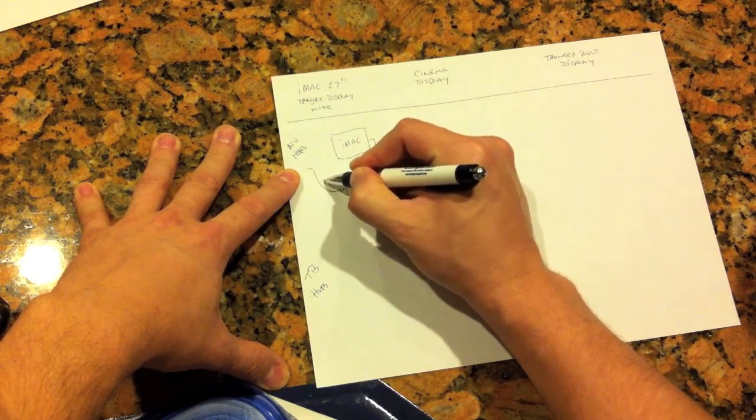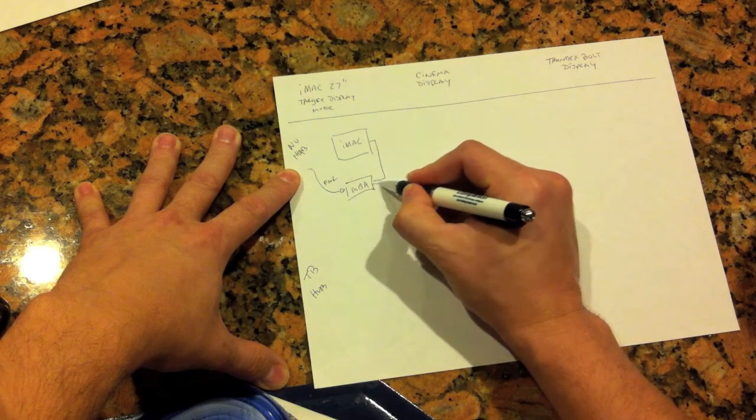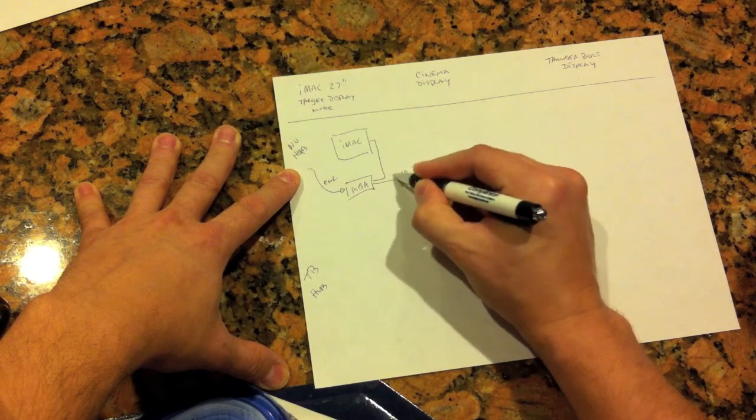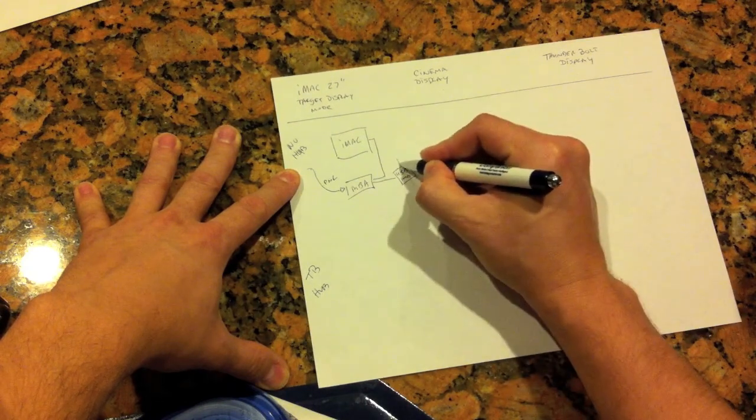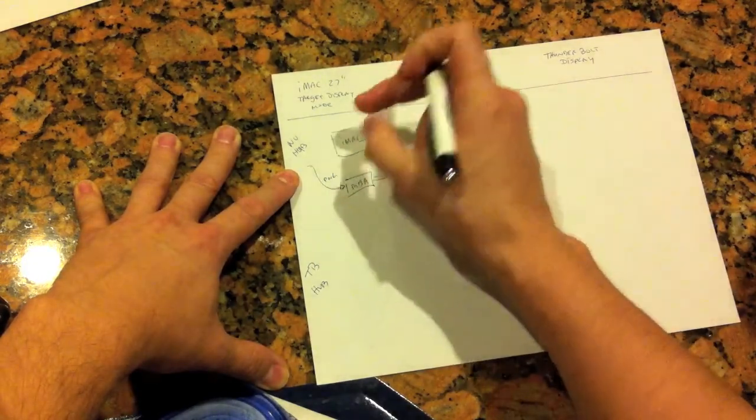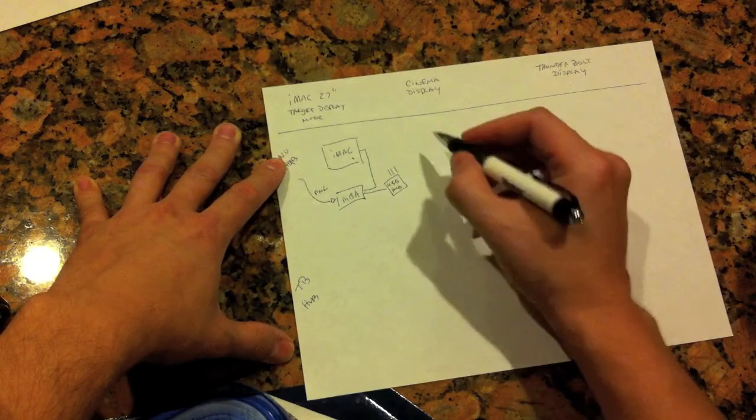Hook up the power to the MacBook Air, and then you would attach a USB hub for your devices. Then you would use the command F2 to get the iMac into target display mode.